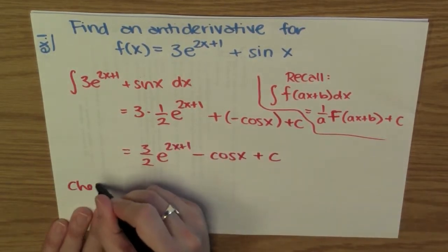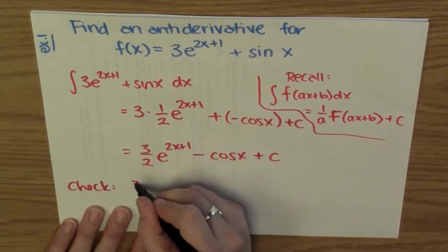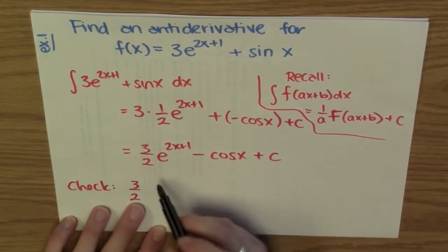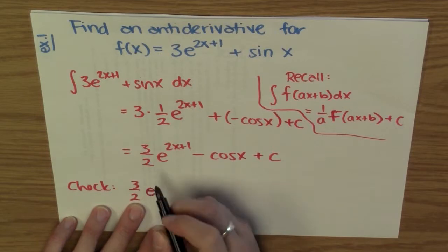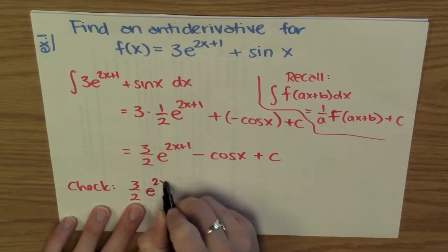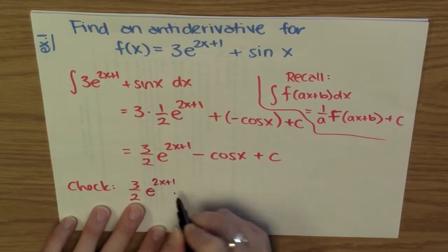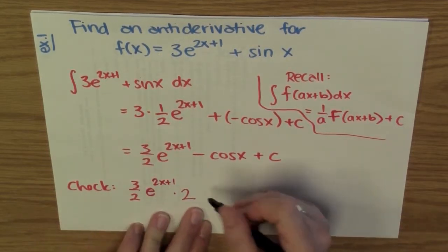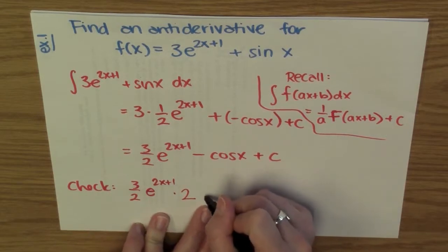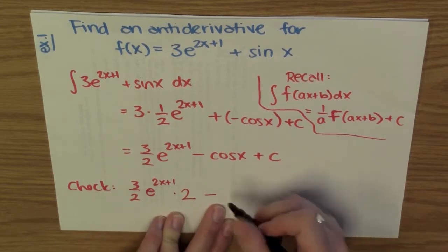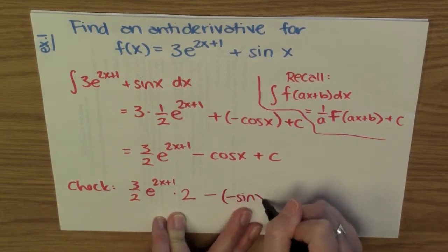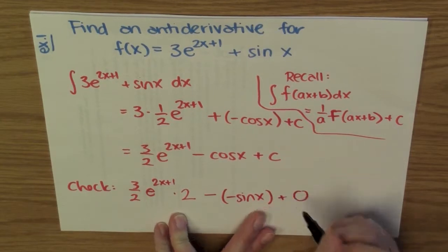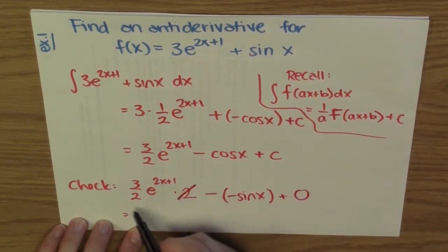We check our work by differentiating. I have 3/2 — the derivative of e^(2x+1) is e^(2x+1) times, using the chain rule, the derivative of the inside function, that's 2. And I have minus — the derivative of cos is minus sin(x), and the derivative of c is 0.